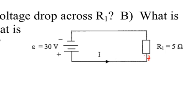Right there, I have a positive potential, and on the other side, I have a negative potential. Whatever potential that there is on the positive side of the battery is going to be transmitted without any diminution to the positive side of the resistor. So you could think of that side of the resistor at high electrical pressure.